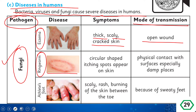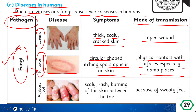Then there is ringworm, also caused by a fungus. The symptoms are circular-shaped itchy spots that appear on the skin. It is transmitted through physical contact with surfaces, especially damp places — if you touch a damp place where fungi are present, they can enter your skin and cause ringworm.